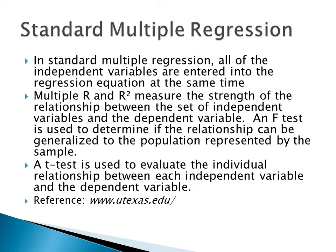In standard multiple regression, all the independent variables are entered into the regression equation at the same time. All independent variables that could have a direct association to the dependent variable are entered simultaneously. There is a big equation, but you will not have to know it — it's simply put into a statistical program, usually SPSS.